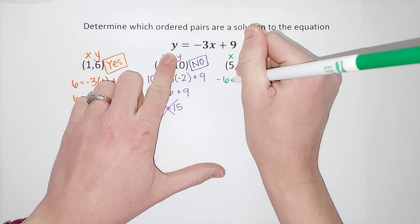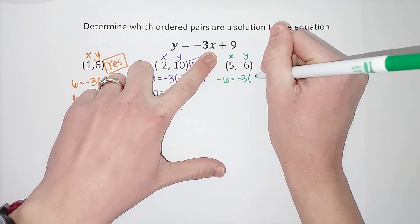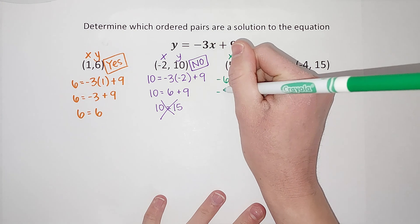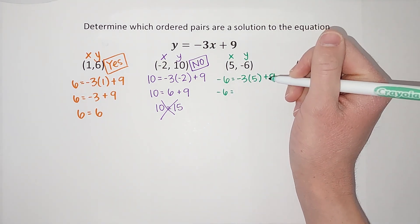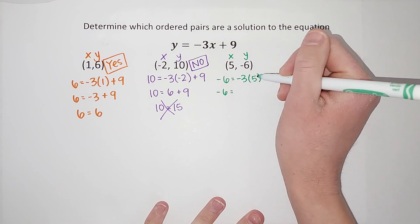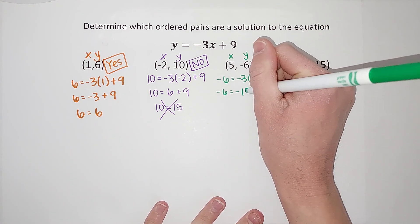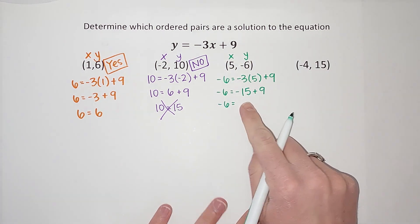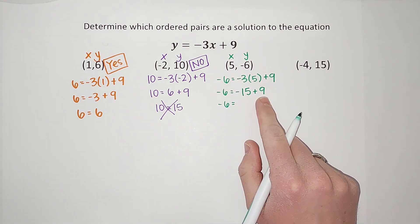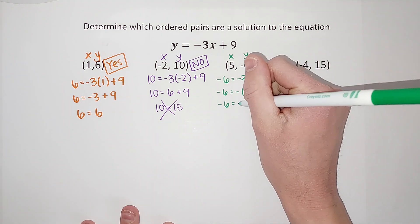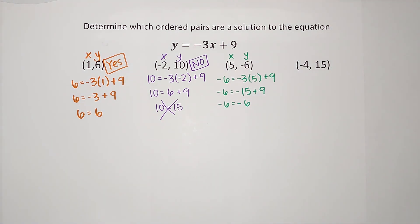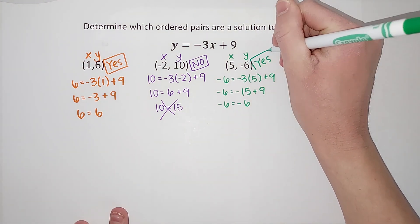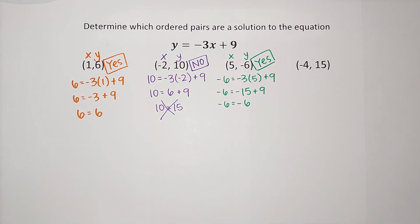Third one: first number is my x, second one is my y. So y equals — negative six equals negative three times x, and we're seeing if x can be five, plus nine. Negative six equals negative three times five — a negative times a positive gives me negative fifteen, plus nine. This is like: I owe you fifteen dollars but I can give you nine, so I still owe you six. So negative six equals negative six, which is true.